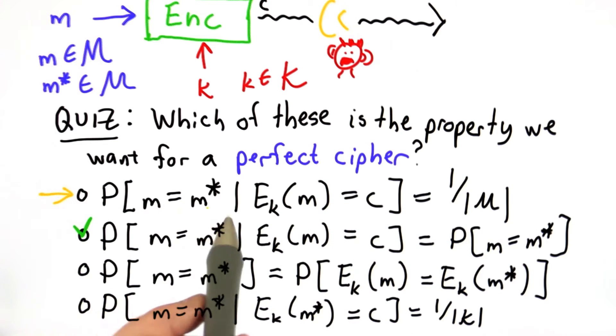In that case, the probability that the message is m star would be 1 over the number of possible messages, not depending on the ciphertext.